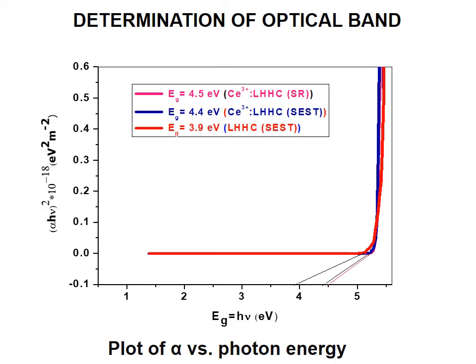Determination of the optical band gaps shows that CE3+ LHHC crystals grown by the SEST and SR methods have band gaps of 4.40 eV and 4.50 eV respectively. The band gap energy of the pure crystal is 3.90 eV, in accordance with literature. As an outcome of the wide band gap, the crystal possesses excellent transmittance in the visible region.